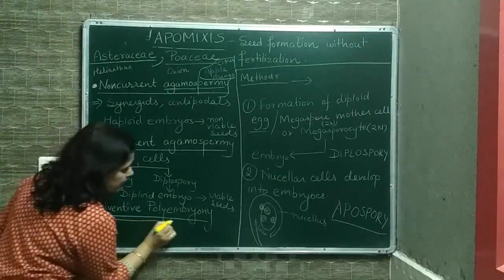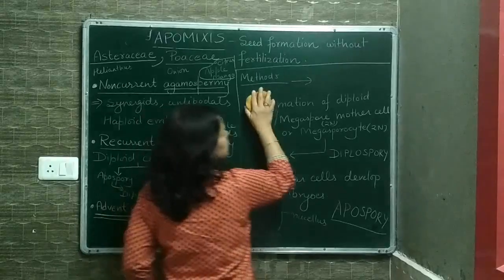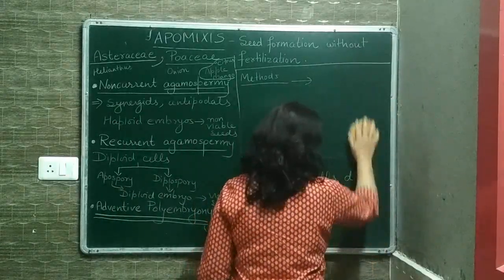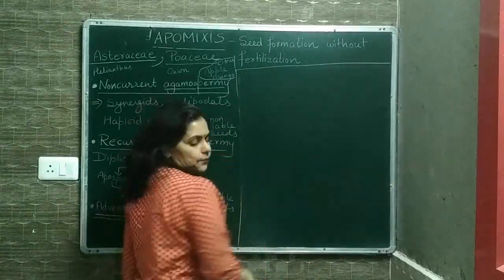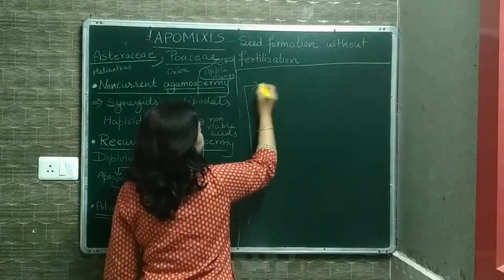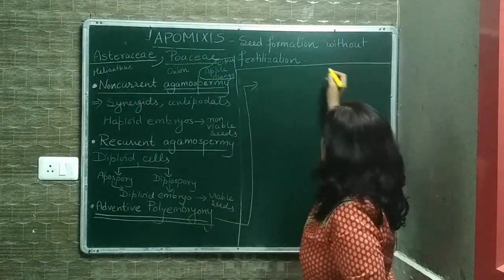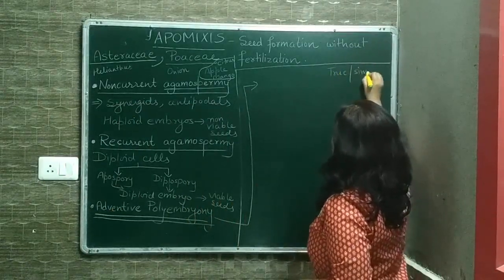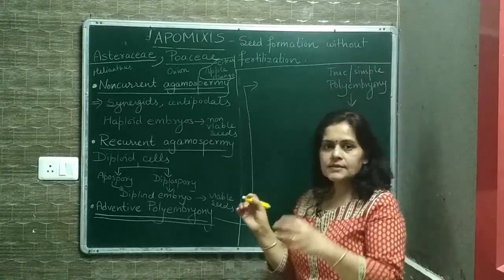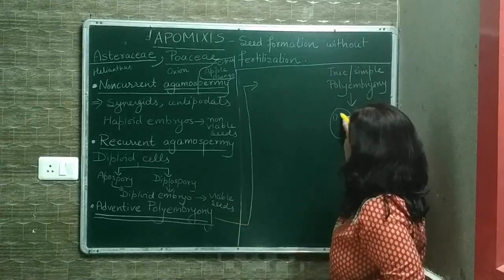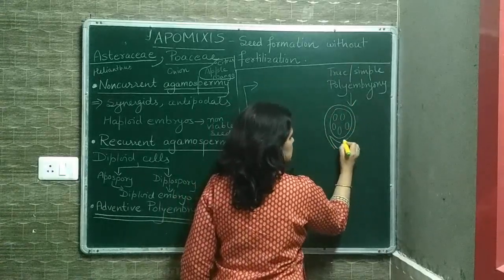The third type is adventive polyembryony. Polyembryony means formation of many embryos within a single embryo sac — if one embryo sac has more than one embryo, then the seed will also have more than one embryo. In true or simple polyembryony, a seed has many embryo sacs; after fertilization, all the embryo sacs develop into embryos, forming a seed with many embryos.